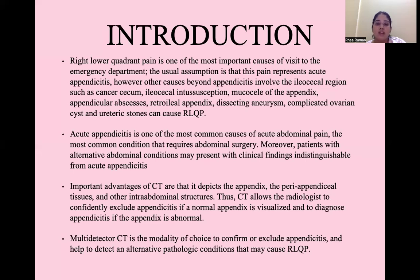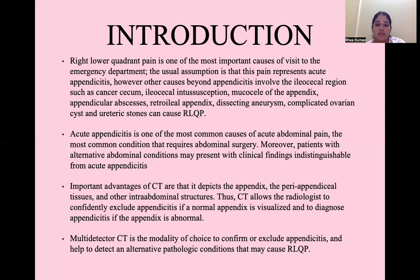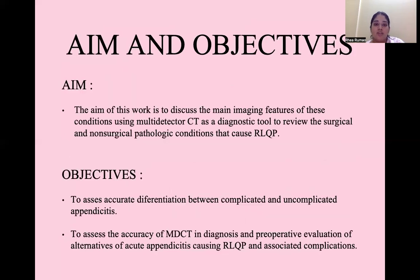Important advantages of CT are that it depicts the appendix, the peri-appendiceal tissues, and other intra-abdominal structures. CT allows the radiologist to confidently exclude appendicitis if a normal appendix is visualized and to diagnose appendicitis if the appendix is abnormal. Multidetector CT is the modality of choice to confirm or exclude appendicitis and to help detect an alternative pathologic condition causing right lower quadrant pain. The aim of this study is to discuss the main imaging features of these conditions using multi-detector CT as a diagnostic tool, and to review the surgical and non-surgical pathologic conditions that cause right lower quadrant pain.